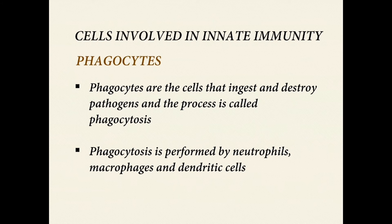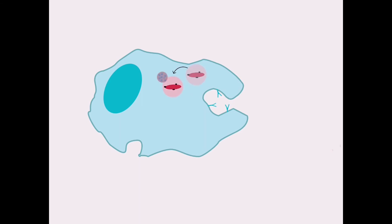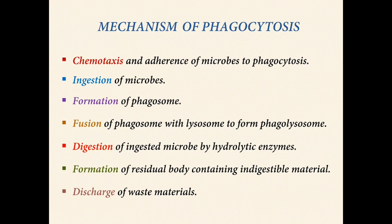Cellular barrier — cells involved in innate immunity. Phagocytes are cells that ingest and destroy pathogens; this process is called phagocytosis, performed by neutrophils, macrophages, and dendritic cells. The mechanism of phagocytosis involves: chemotaxis and adherence of microbes to the phagocyte; ingestion of microbes; formation of a phagosome; fusion of the phagosome with a lysosome to form a phagolysosome; digestion of ingested microbes by hydrolytic enzymes; formation of a residual body containing indigestible material; and discharge of waste materials.